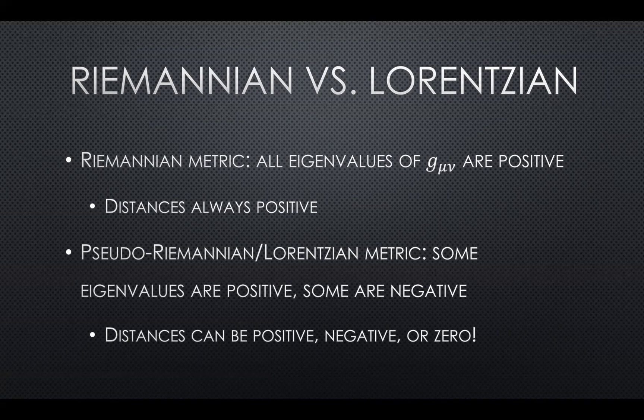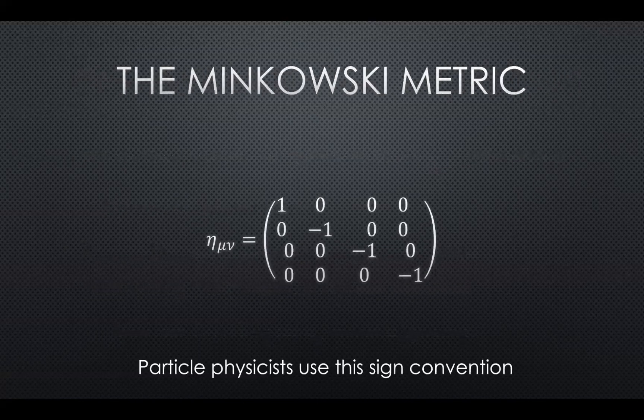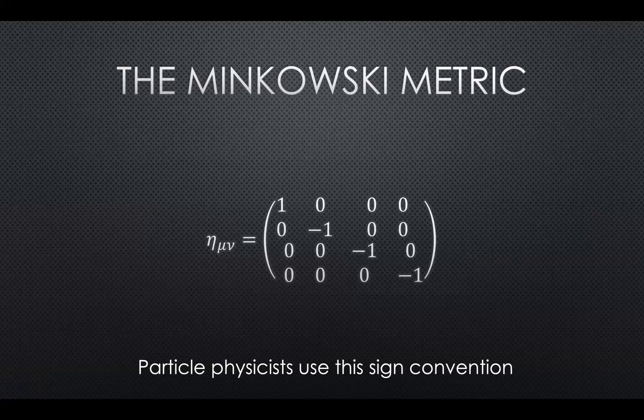Those are called Riemannian metrics, and the main consequence is that distances are guaranteed to always be positive. And that's great, as we learned in class, because then you can have nice things like the Cauchy-Schwarz inequality and the triangle inequality. However, there's also a different type of metric where some eigenvalues can be positive and some can be negative. And the main consequence of that is that distances can be positive, negative, or even zero.